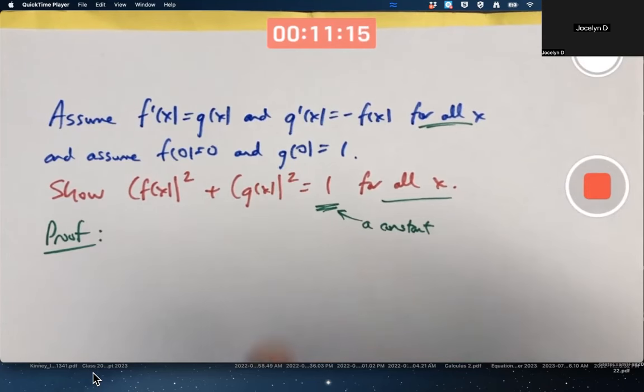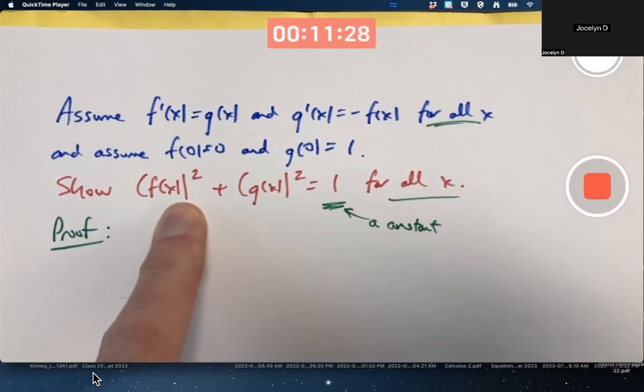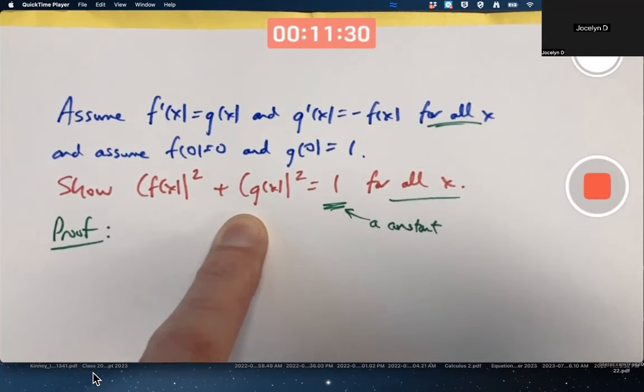Since this is a constant, you want to show it equals this constant. What would be good enough to do that? To show it's any constant. To use the constant function theorem, I guess I'd have to show the derivative of this function, f of x squared plus g of x squared is always 0.